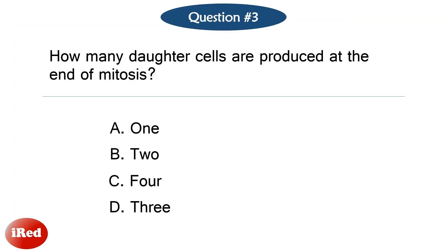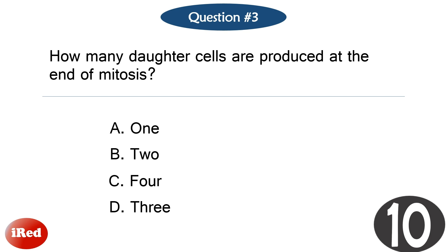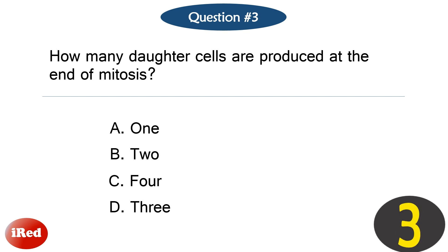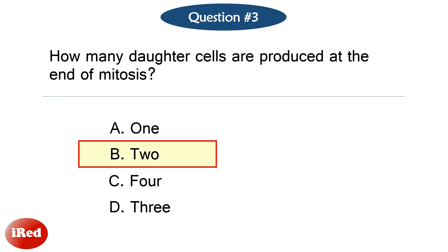Question number three. How many daughter cells are produced at the end of mitosis? The correct answer is letter B: two.